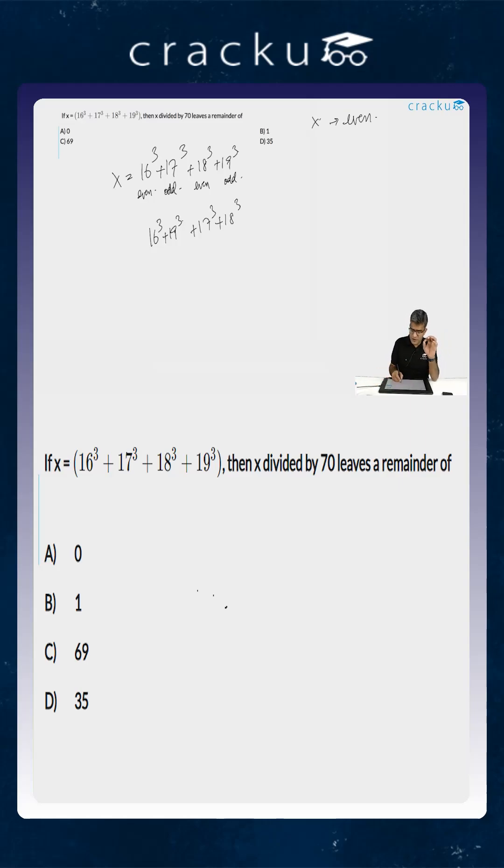We know the value of a cube plus b cube. This is equal to a plus b into a square minus ab plus b square. Essentially, for a cube plus b cube, one of the factors is a plus b.